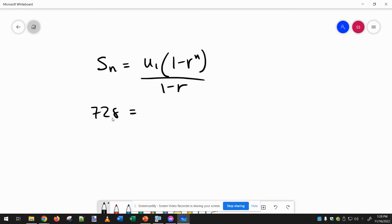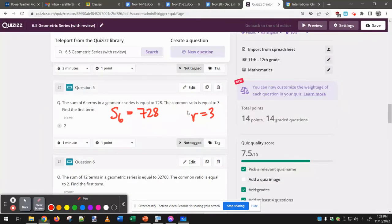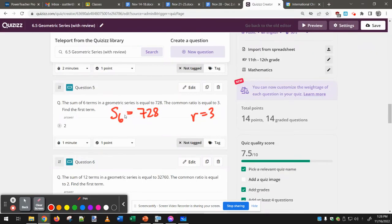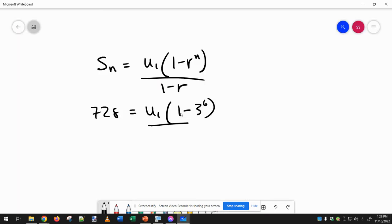728, and that is for six terms. So that means first term here, and then 1 minus R is 3, and N is 6, and then R is 3 again.